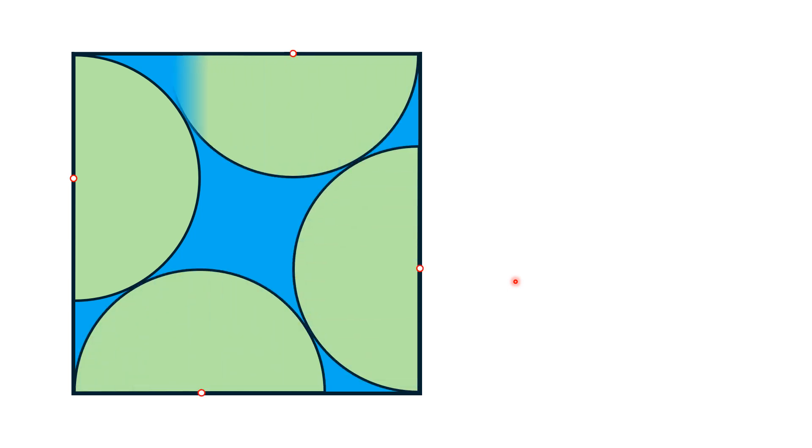Hello everyone, in this video given is a square in which four identical semicircles are inscribed in such a way that diameter of each semicircle is lying on different side of the square.